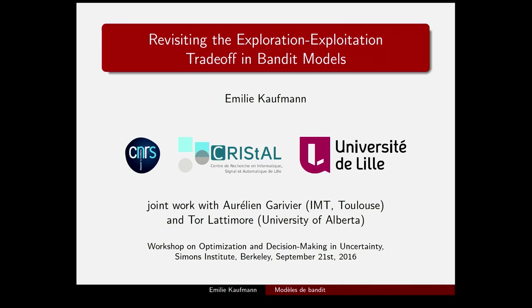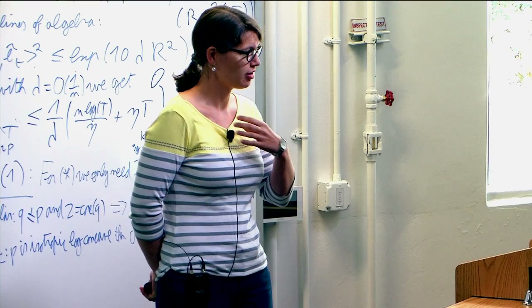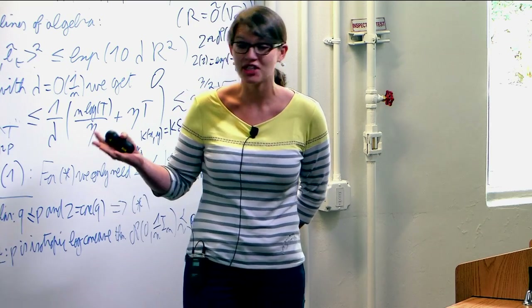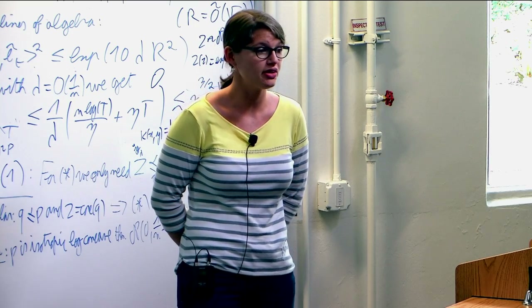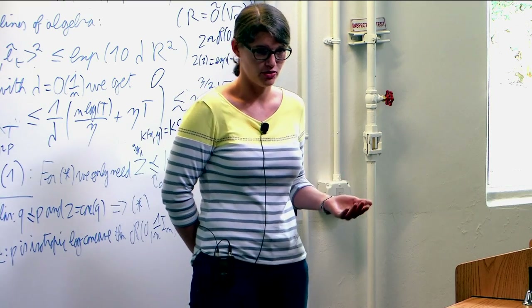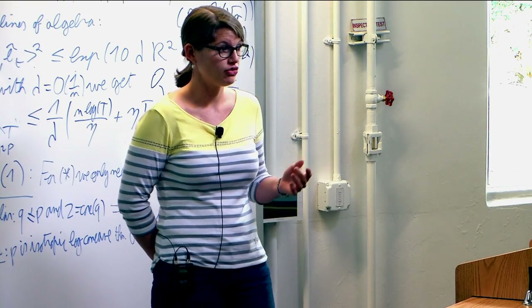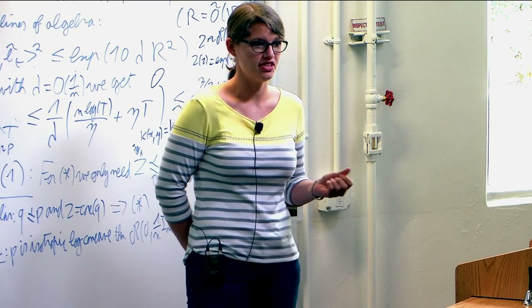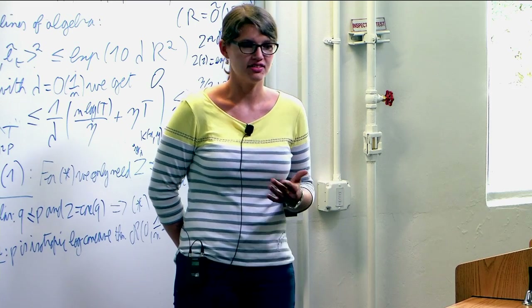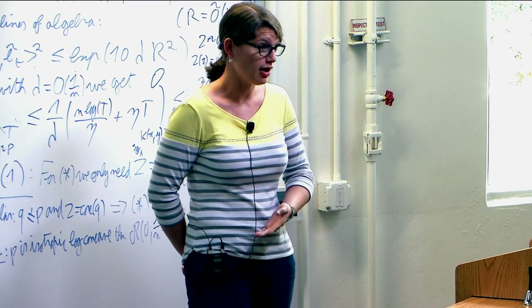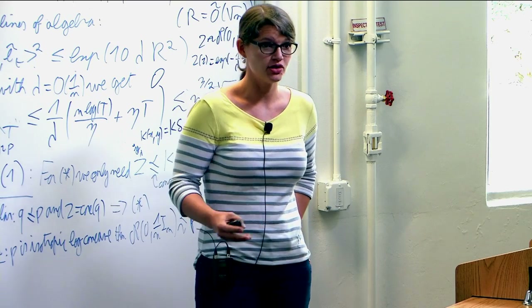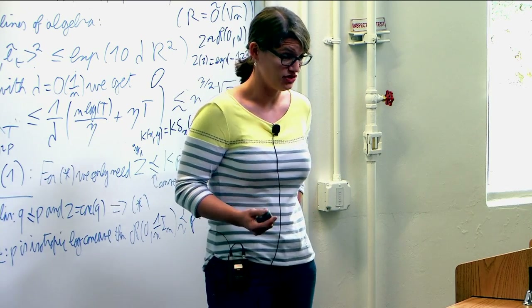The multi-armed bandit problem, which is the focus of this talk, is often associated with the need for an exploration-exploitation trade-off. The first goal of this talk is to contrast this objective with that of pure exploration, in which we relax the constraint to maximize rewards while discovering the best arm. We will see that sampling strategies for both objectives are quite different indeed.